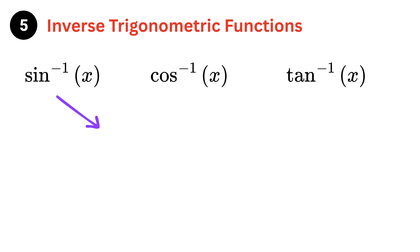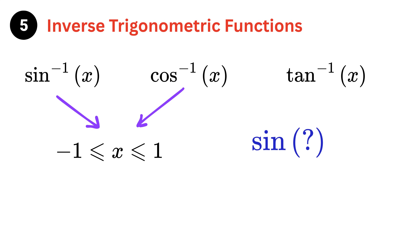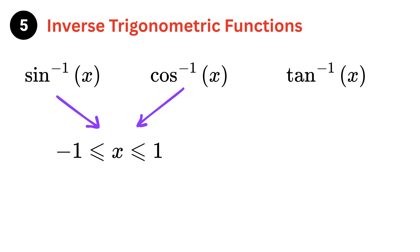Sine inverse of x and cosine inverse of x are only defined for values between −1 and 1, both inclusive. This is because the sine and cosine of any real angle can only produce outputs between −1 and 1, so their inverses can only accept inputs within that same range. Saying the sine of any angle equals 3 would be nonsensical. Note that inverse tangent of x is defined for all real numbers.